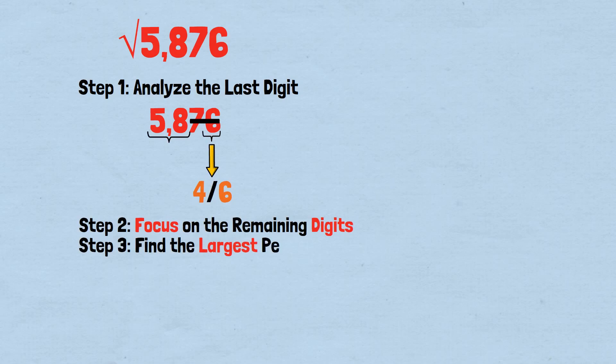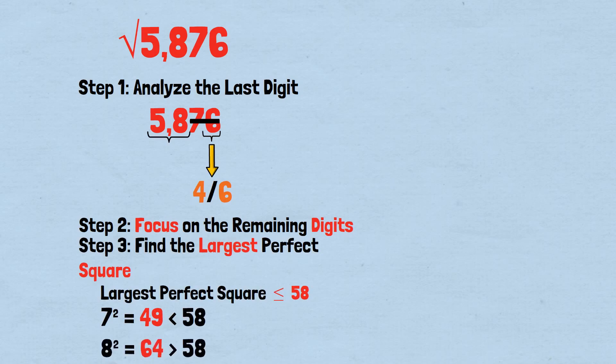Step 3: Find the largest perfect square. What's the largest perfect square that doesn't exceed 58? 7 squared equals 49, less than 58. 8 squared equals 64, greater than 58. So 7 squared equals 49 is our answer, giving us 7 as the first digit. Step 4: We have two candidates. Our potential answers are 74 and 76.